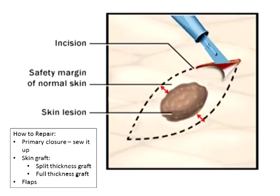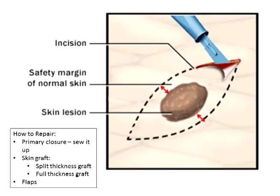So we talked about primary closure — that's when we sew it up — skin grafts, and then there are occasions where we'll have plastic surgeon colleagues do what's called a flap, moving the patient's own tissue into the wound. We do have rules and guidelines for that, and we don't want the repair to complicate the principle of removing the tissue.